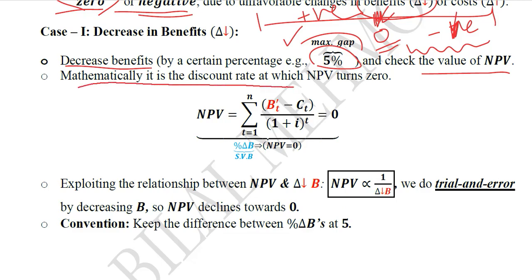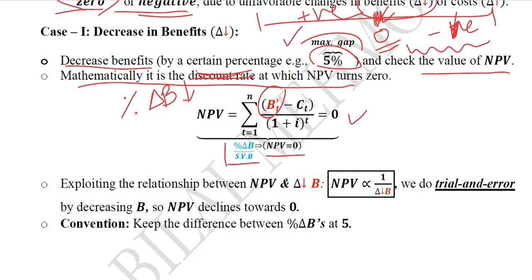Mathematically, the NPV would turn 0 at such an unexpected decline in the benefits. This is the formula: NPV equals 0 after a certain change in the benefits, and the percentage change in B is the switching value of B at which the NPV is 0. So whenever the NPV turns 0, that percentage change in B is known as SVB — the switching value of benefits. We will see what SVB stands for as we go ahead.